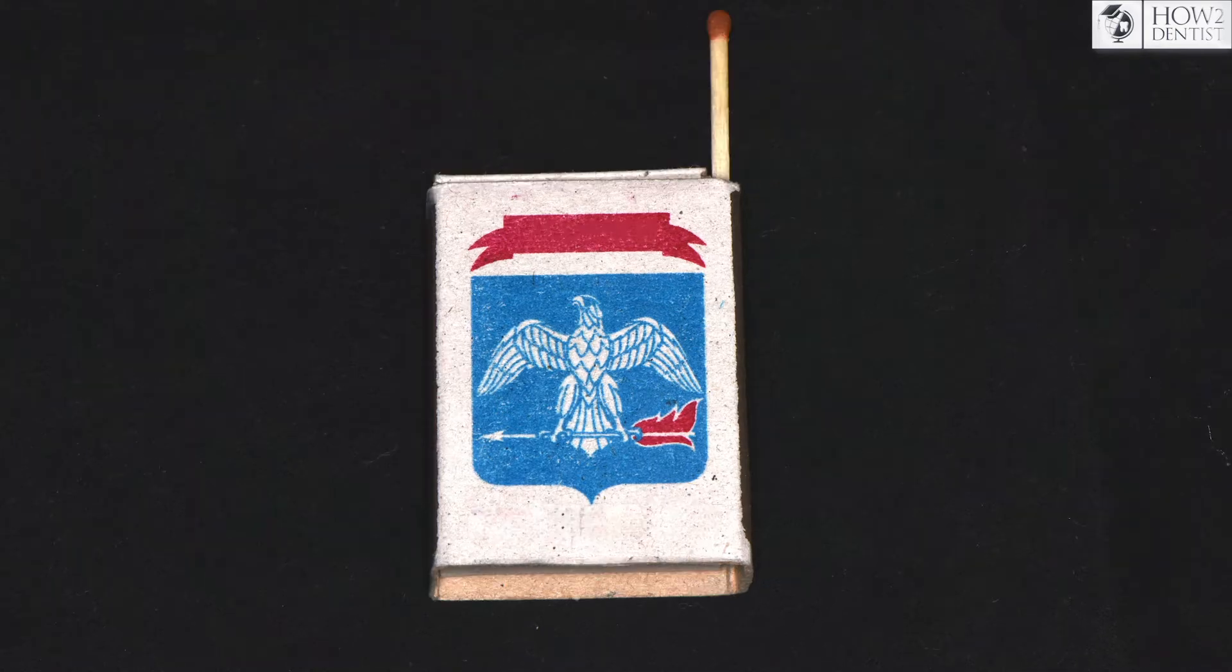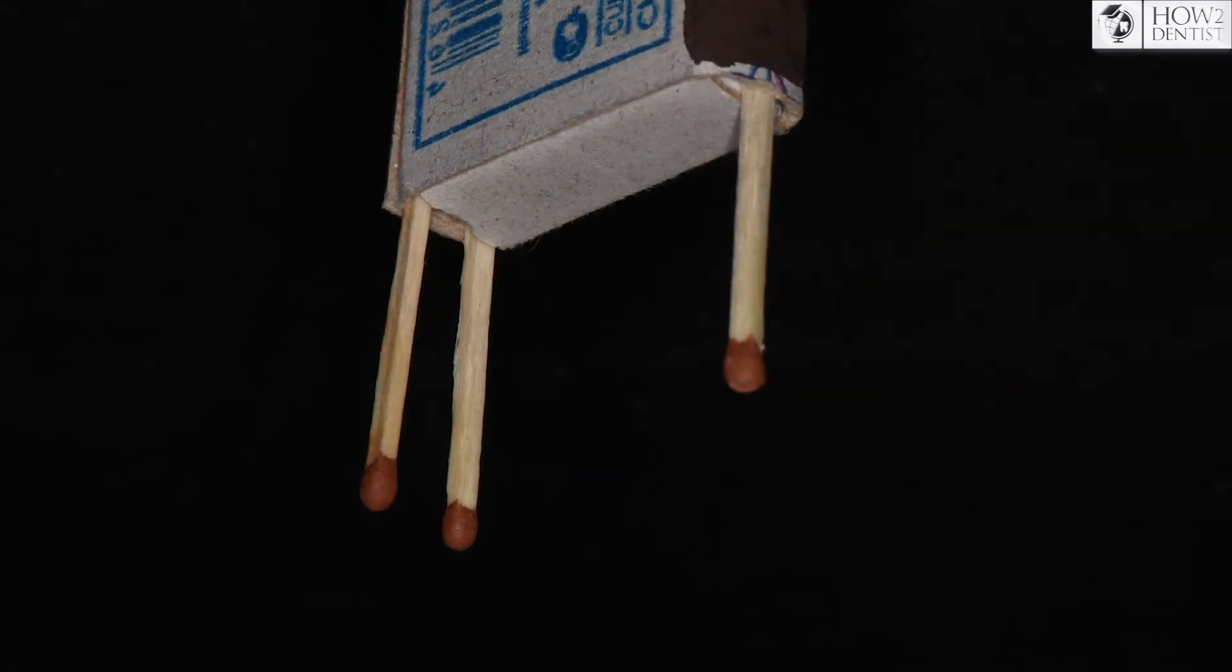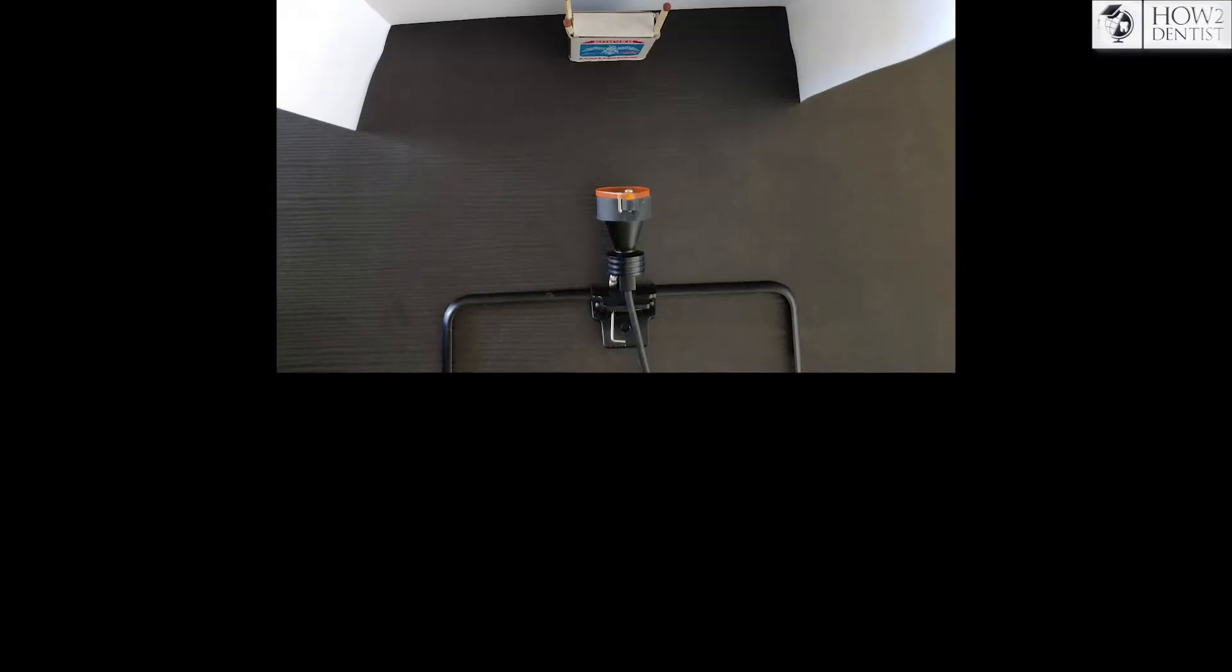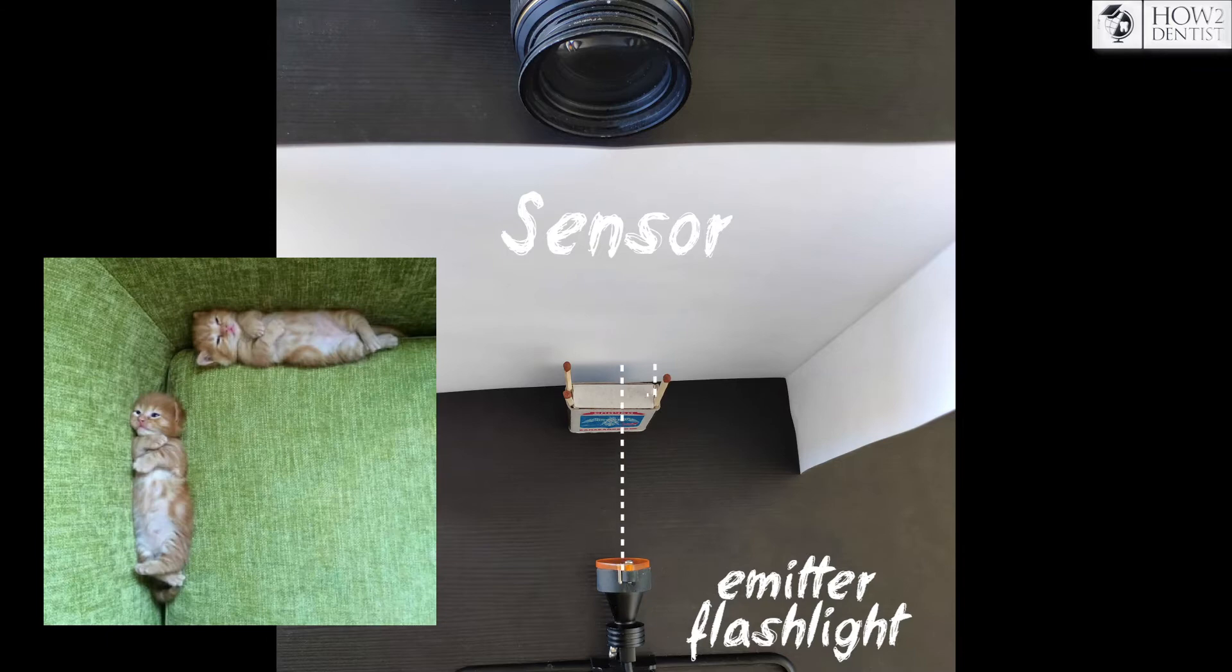Now we place the matches in the box as if they were the roots of the lower molar: the mesial, buccal and lingual, and distal. Then we place the sensor and flashlight. As can be seen from the picture, they should be perpendicular. Turn on the flashlight.